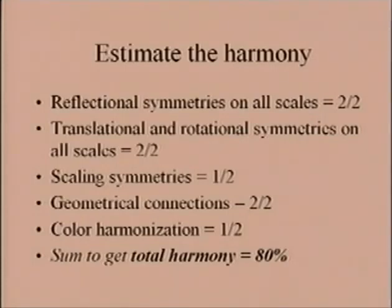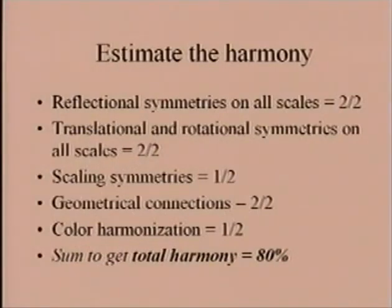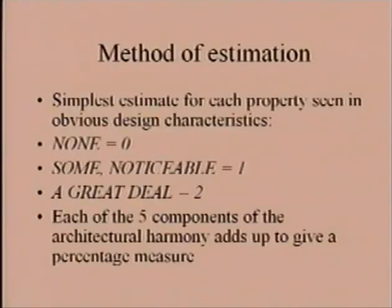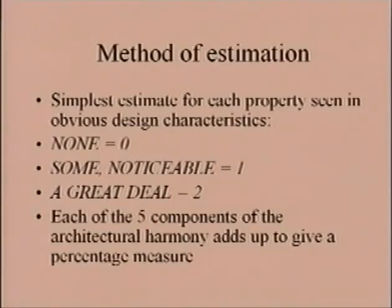Geometrical connections: the entire structure is rife with them, so I give 2 out of 2. Scaling symmetries: there are some, but this building is not predominantly based on scaling symmetries, so I give 1 out of 2. Color harmonization: I give 1 out of 2. There is a small amount of color; it harmonizes well, but the harmony of the structure does not depend on color harmonization. Altogether, adding all those estimates, I get 8 out of 10, which is 80% — a rough figure for the total harmony of this building.